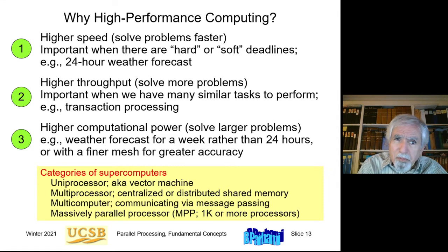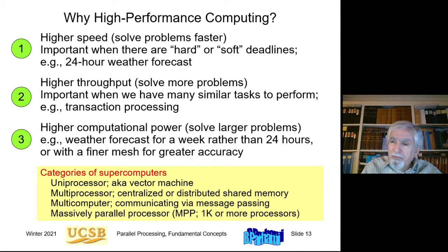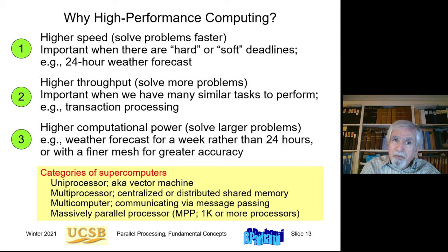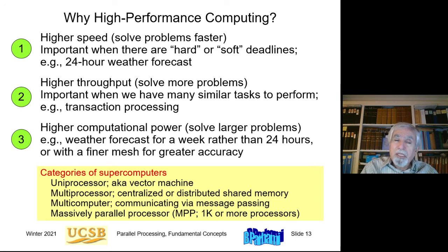Why do we need high performance computing? First, to achieve higher speed. Scientific modeling problems — particularly in physics — can take weeks or months on the fastest available computers. Higher speed lets us run them in hours or days instead. For example, a 24-hour weather forecast program that itself takes 24 hours to run would produce useless output; but if it runs in one hour, the output is still useful with 23 hours remaining in that period.